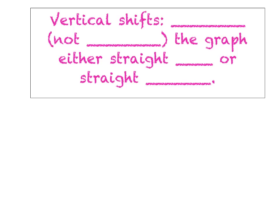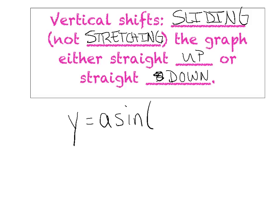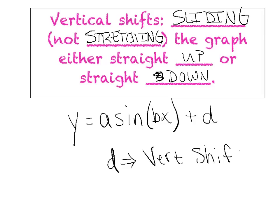We're finally ready to get into today's new topic. Vertical shifts is the sliding of a graph — not stretching. Stretching means we're manipulating the curve's amplitude; we're not doing that. We're sliding the graph either straight up or straight down. The general form of a trig curve we used to write as a times the sine of bx — now we're going to add a plus d at the end, outside the parentheses. That d represents the vertical shift. If you see a plus 2, you go up 2; if you see minus 2, you go down 2.